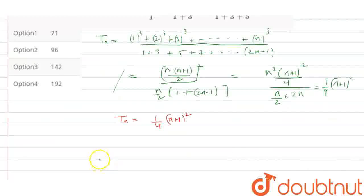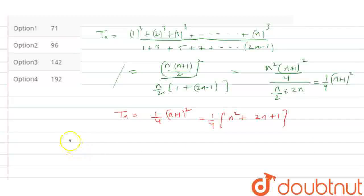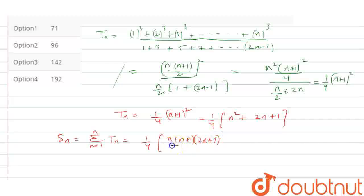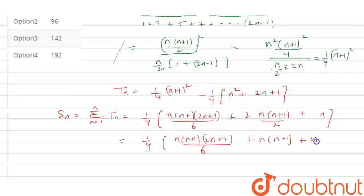We can expand this as (1/4)(n² + 2n + 1). The sum of n terms is calculated as the summation from n=1 to n of Tₙ, which equals (1/4) times [sum of n² = n(n+1)(2n+1)/6, plus sum of 2n = n(n+1), plus sum of 1 = n].